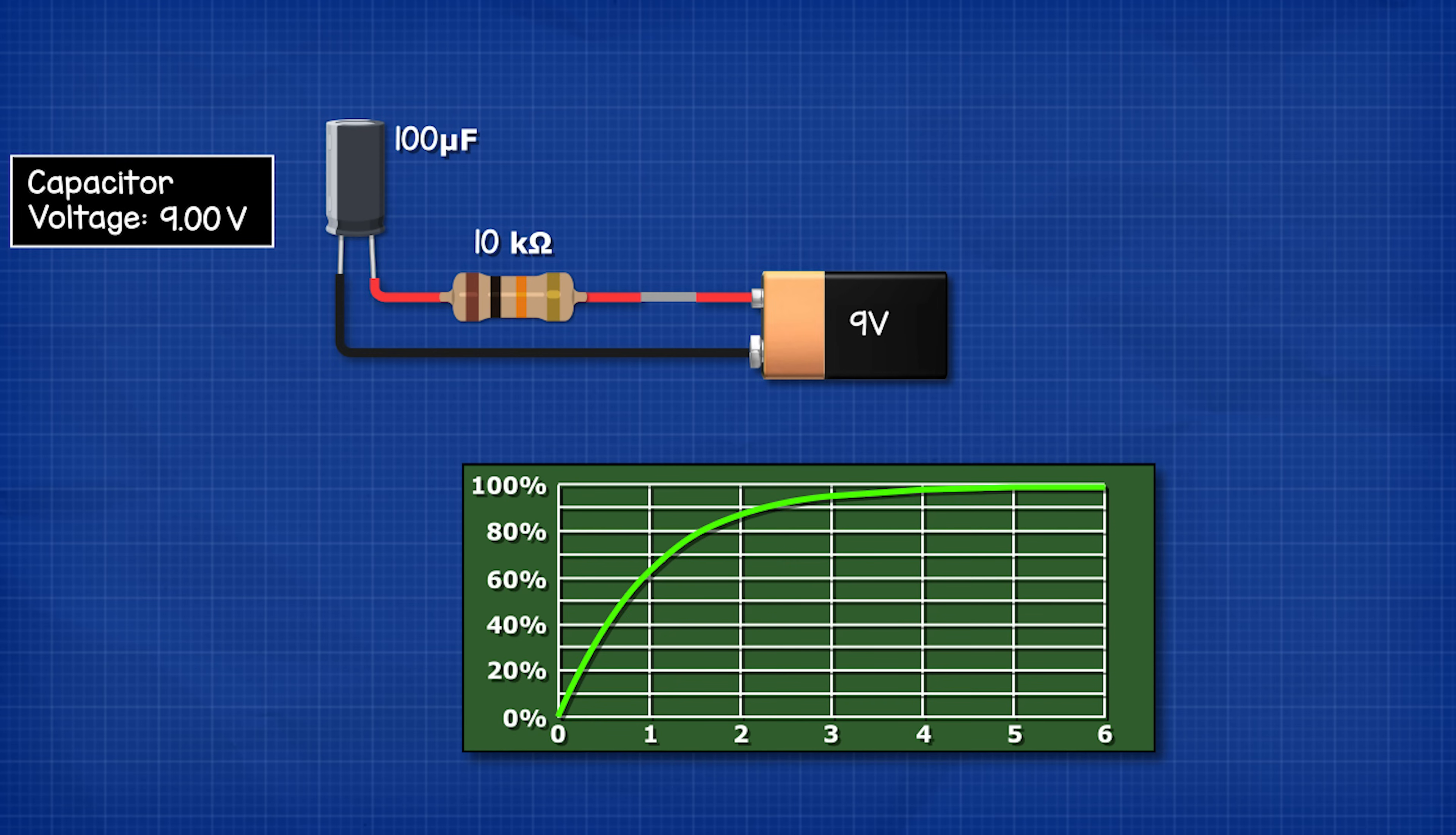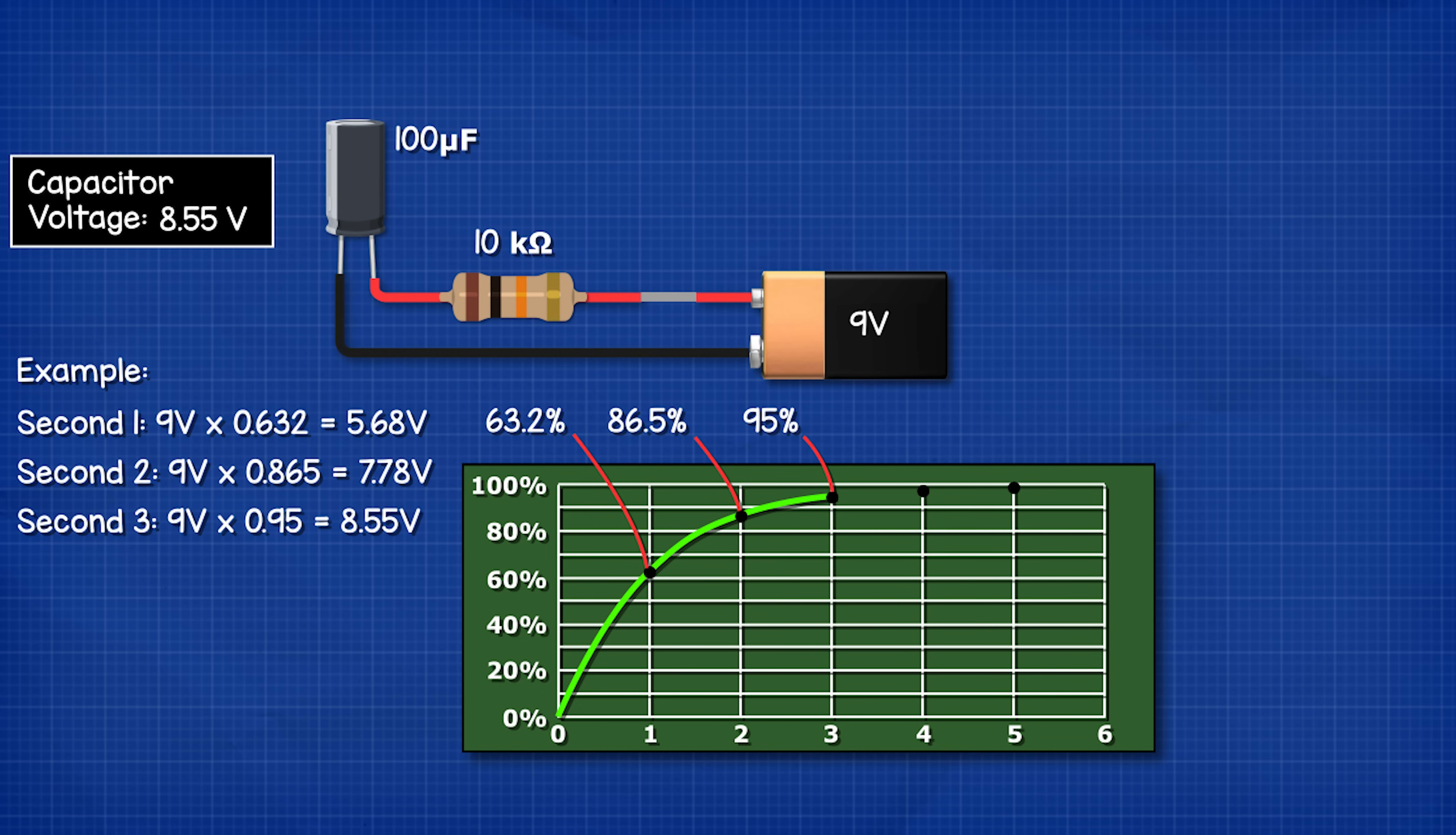Coming back to our original circuit we can therefore calculate the voltage level at each time constant. At point one the voltage is always 63.2 percent. Point two is 86.5 percent. Point three is 95 percent.